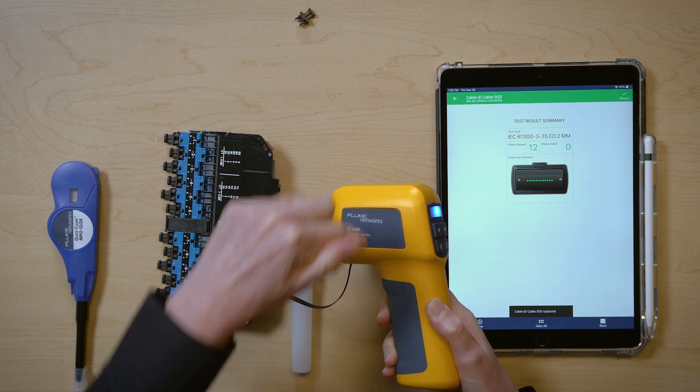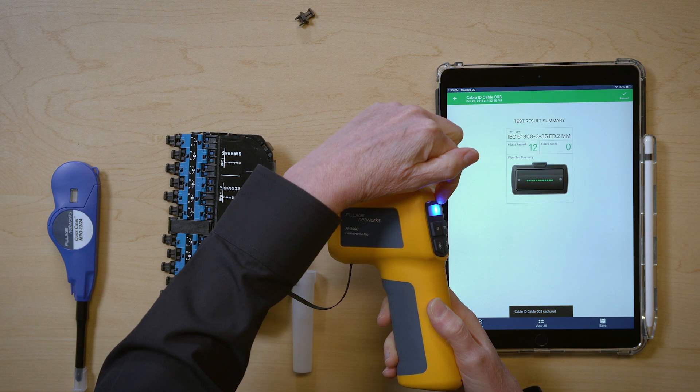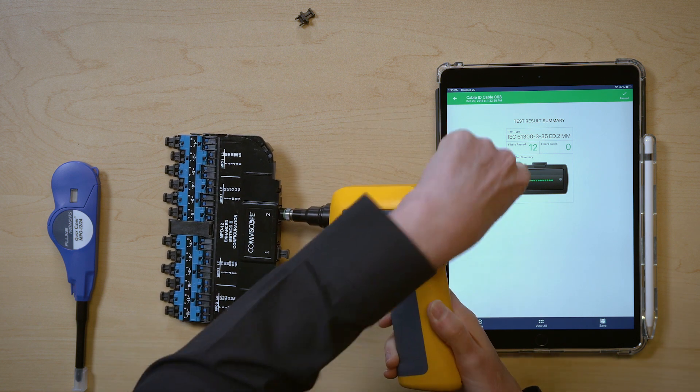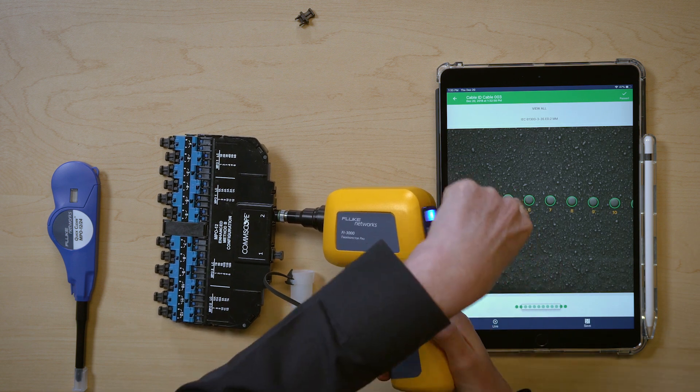All 12 fibers are good. And you can also see that on the camera with the green light. So I can go in and zoom in on these if I want, just like before.